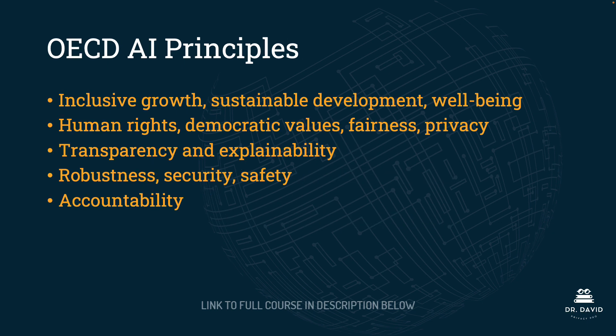The five principles are: number one, inclusive growth, sustainable development, and well-being; number two, human rights, democratic values, fairness, and privacy; number three, transparency and explainability; number four, robustness, security, and safety; and number five, accountability. The first few are quite a mouthful, but it's important that you remember these — they are almost certain to come up on the exam. Because they were the first intergovernmental standard, they have been incorporated into all of the other frameworks we'll be looking at shortly.